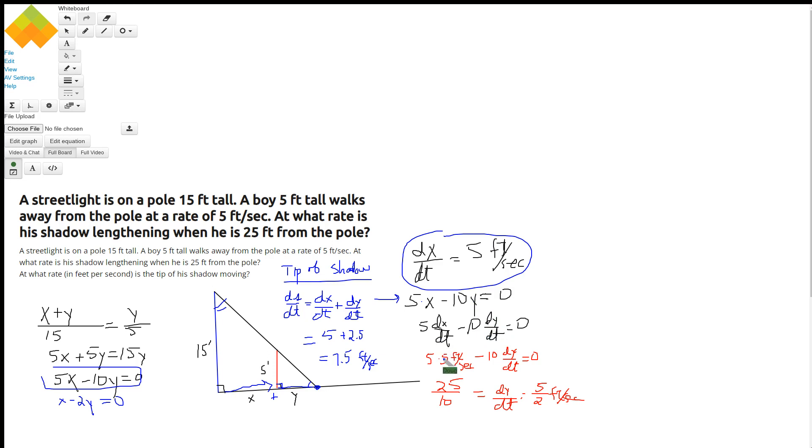We want to solve for dy/dt given that dx/dt is 5 feet per second. Notice that this really has nothing to do with anything because the rates are the same regardless of his position or his distance from the pole. So dy/dt is how fast the length of his shadow is changing, which is 5/2 or 2.5 feet per second.